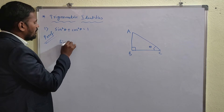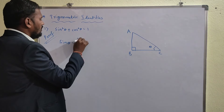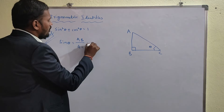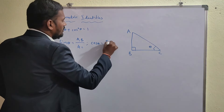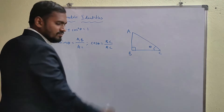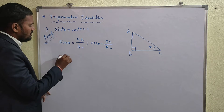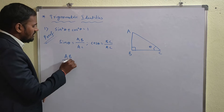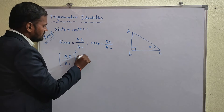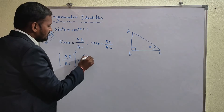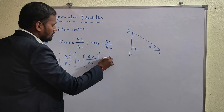sin θ = AB/AC and cos θ = BC/AC. Substituting these values into the identity: (AB/AC)² + (BC/AC)² = 1.